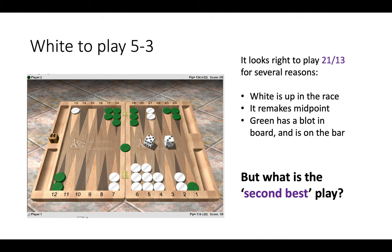It remakes the midpoint, and also green has a blot in our home board and also on the bar. So usually we want to take advantage of green being on the bar and run. The game plan suggests when you're ahead in the race, then run. But stop. What is the second best play?